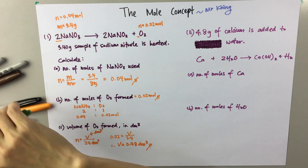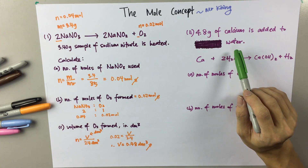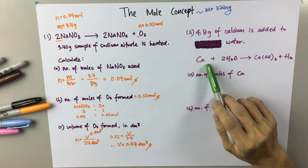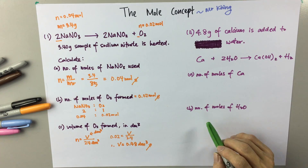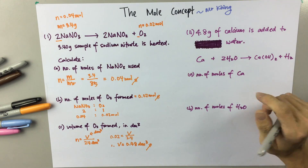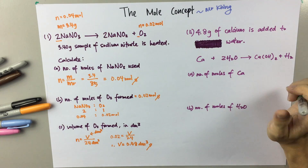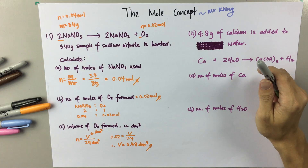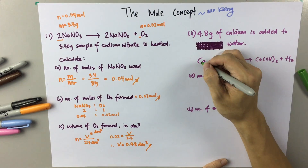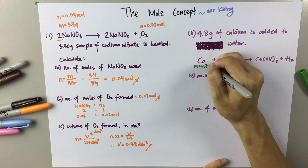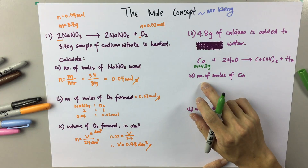Let's try another question. In this case, there's 4.8 grams of calcium added to water, with this given balanced equation. They ask you to look for the numbers of moles of calcium and numbers of moles of water. Remember, before you start, always look for the information available — then you can determine what formula to use. Given the mass of calcium is 4.8 grams. So what formula can we use to find the number of moles of calcium?